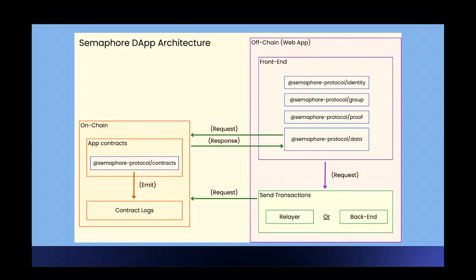In the front end, you will create the identities. You will also need to recreate the groups in the front end to generate proofs — that's why you need the group and proof package. The Semaphore data package is used to fetch on-chain data.